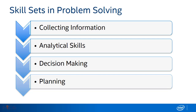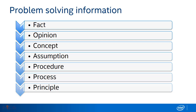Evaluate all pros and cons and make a decision — which course of action do you want to take? Planning is the next course of action, or simply implementing the solution. There are many different types of information to consider when beginning the creative problem-solving process. These are fact, opinion, concept, assumption, procedure, process, and principle.